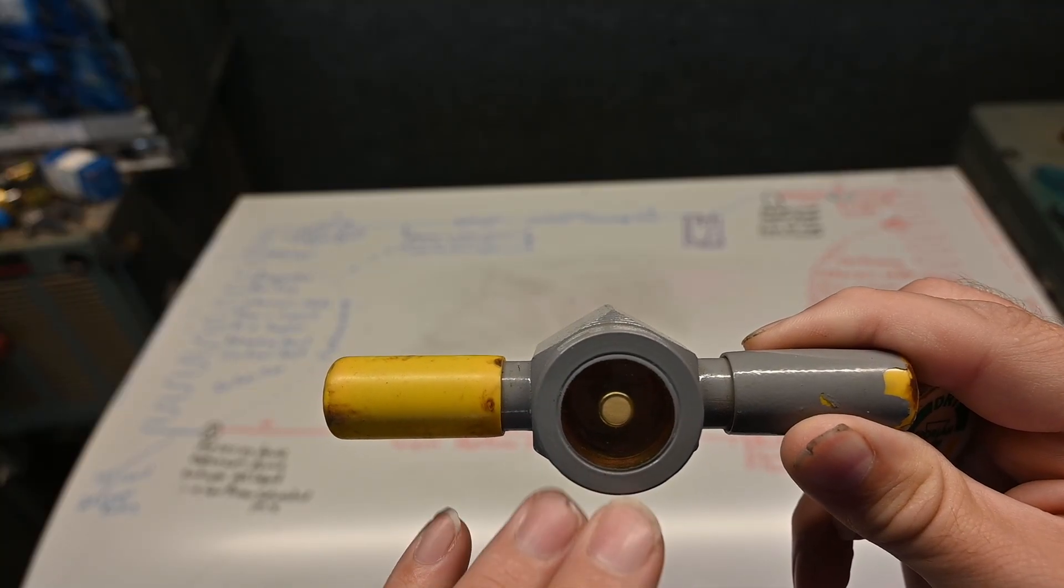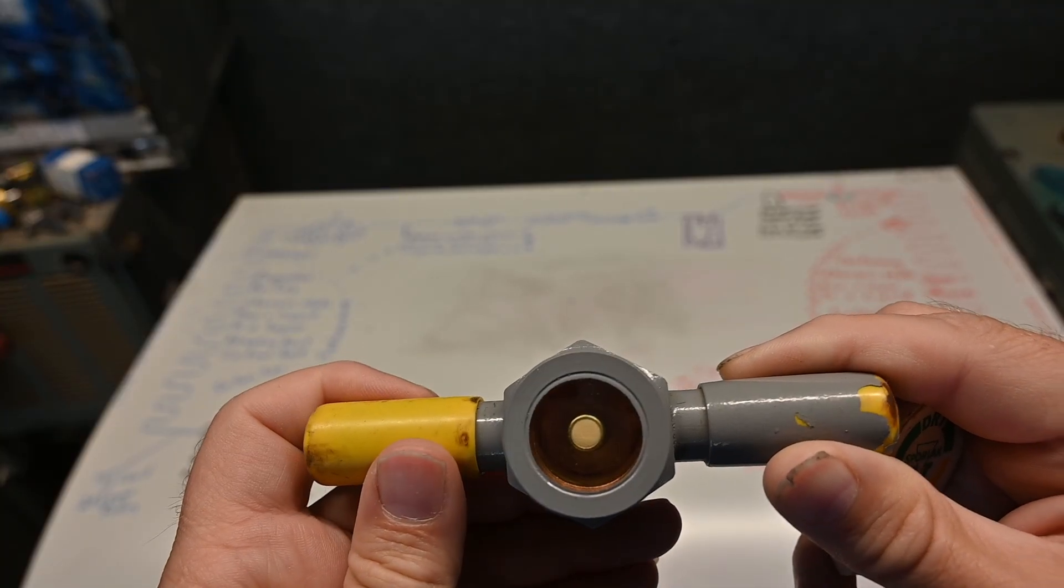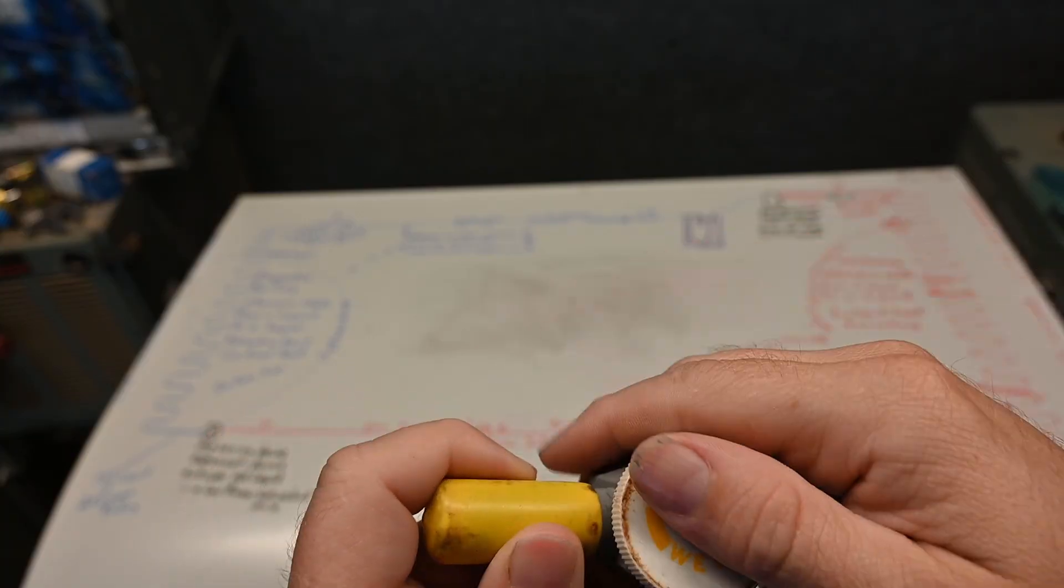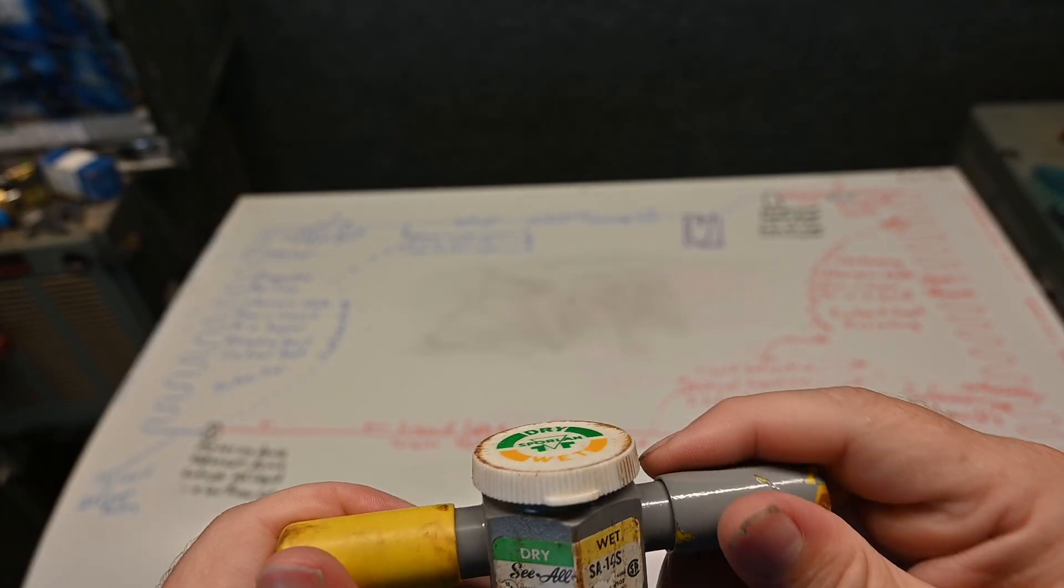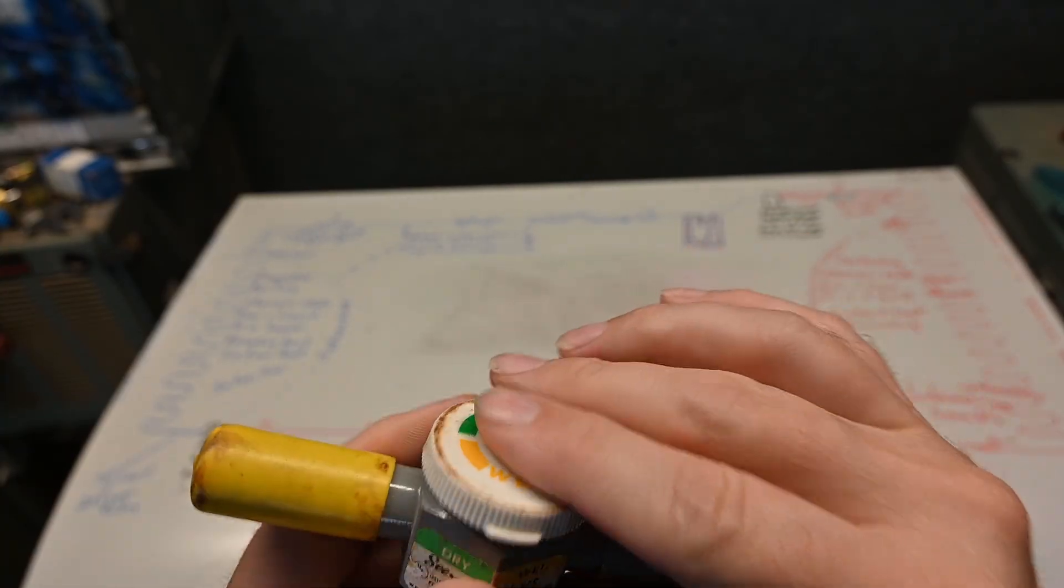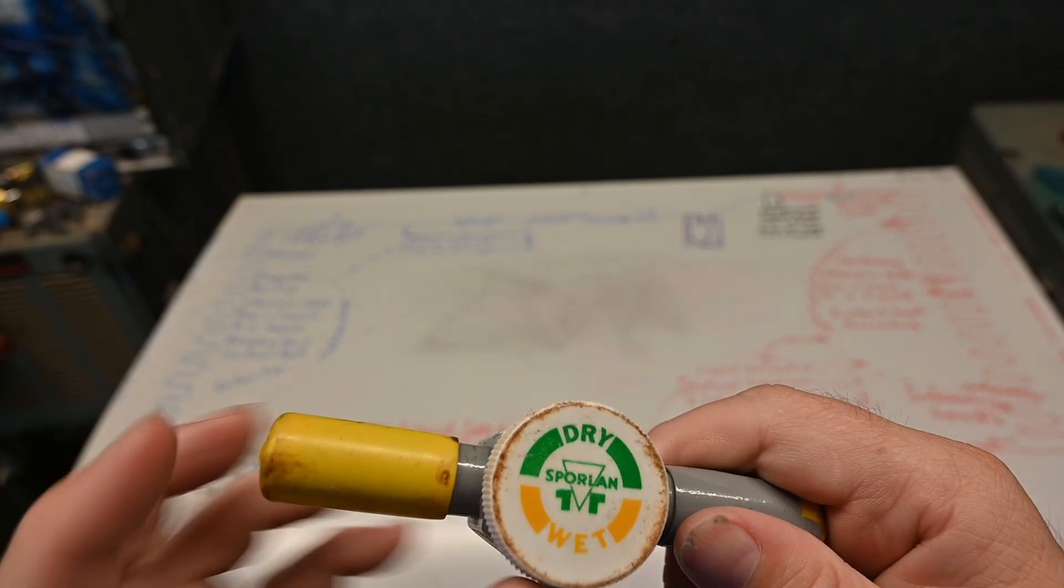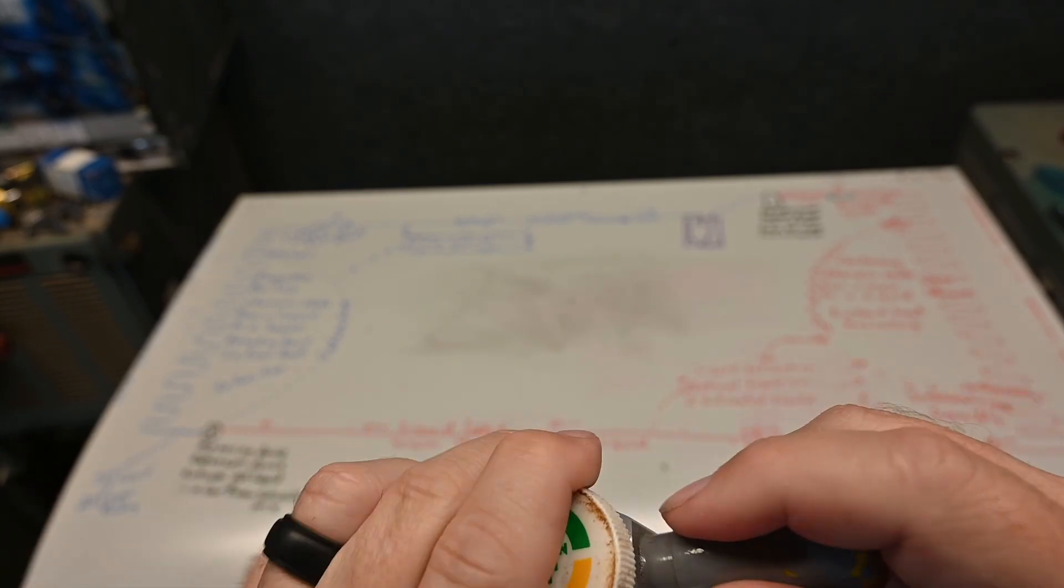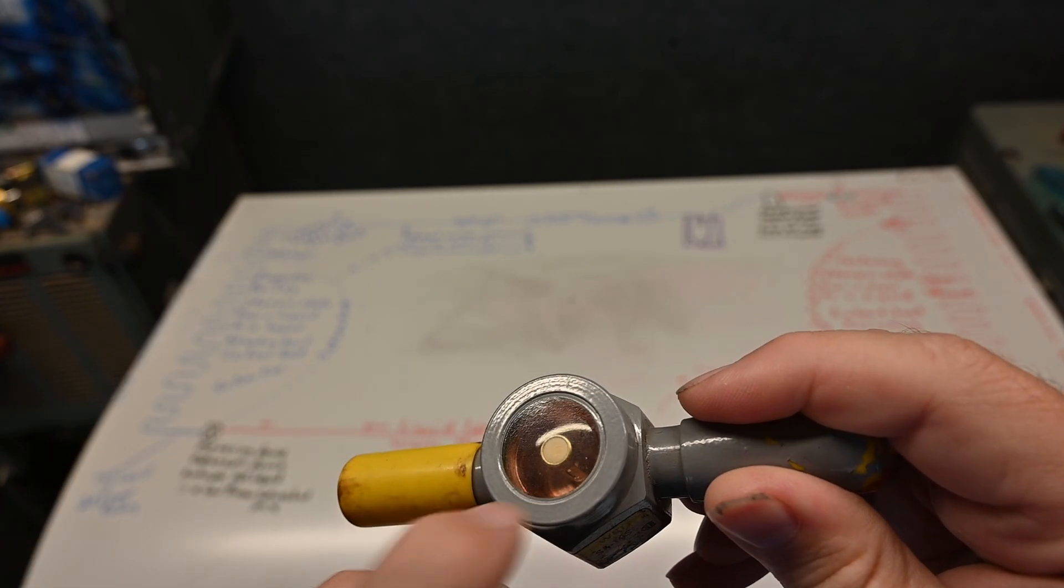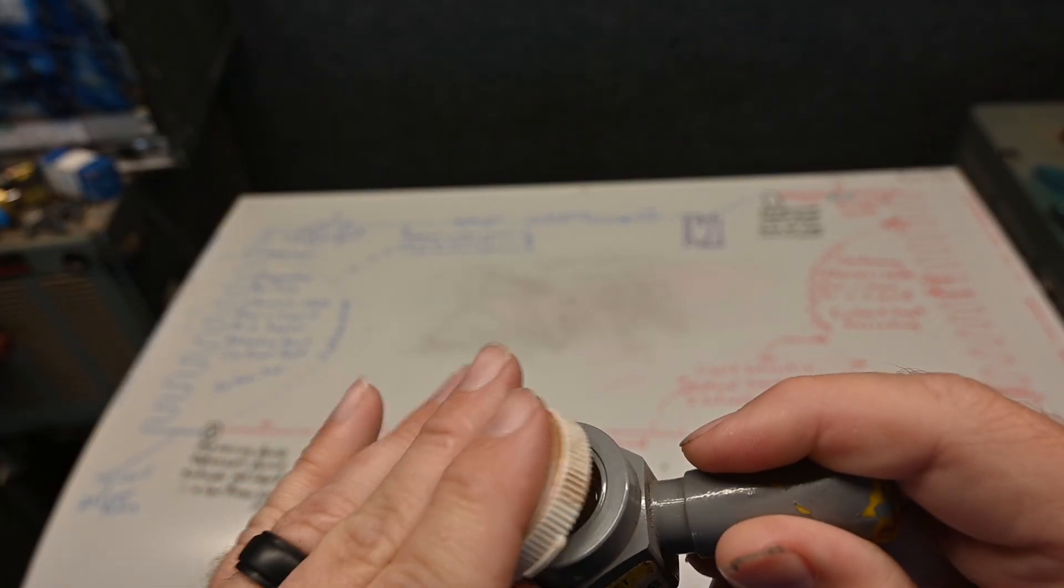This sight glass when you're brazing in has to be protected with wet rags or heat absorbing paste, because as soon as you get this too hot it will break this glass or the glass seal there. It's pretty thick glass but still it can be damaged by heat.